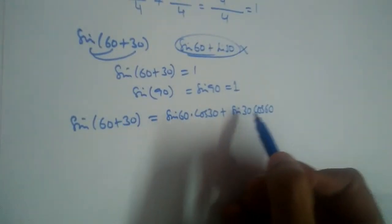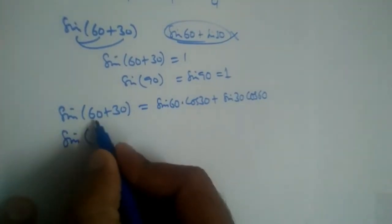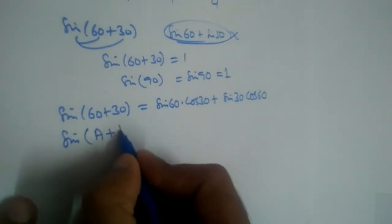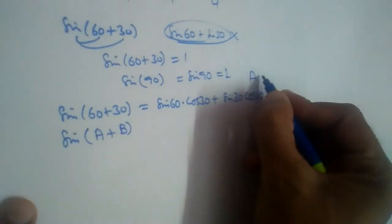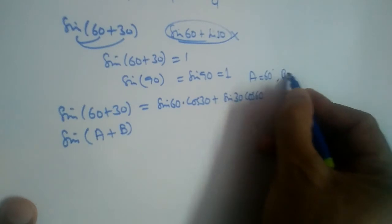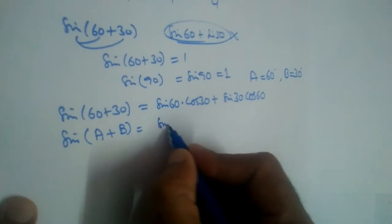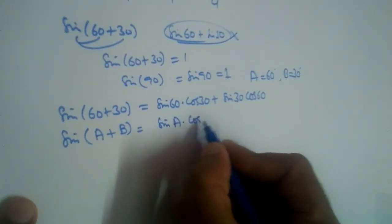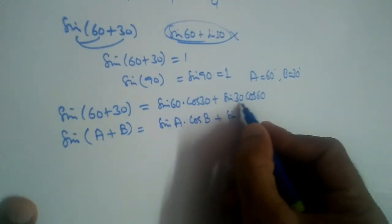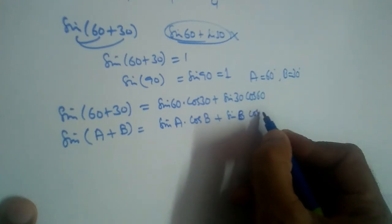Let us generalize this. In place of 60, let us write A, and in place of 30, let us write B. So wherever we have 60, we write A, and wherever we have 30, we write B. So sin A times cos B plus sin B times cos A.